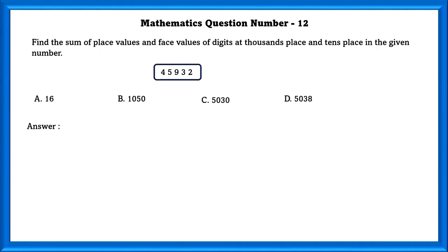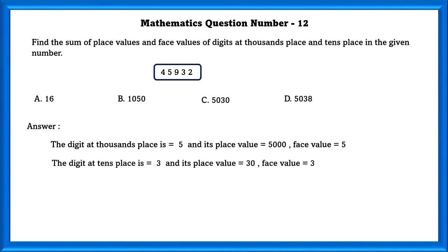Mathematics Question Number 12: Find the sum of place values and face values of digits at thousands place and tens place in the given number. The digit at the thousands place is 5 and its place value is 5000 and face value is 5. And in the tens place, we have 3. Its place value is 30 and face value is 3. So the sum of the place values and face values is equal to 5038.